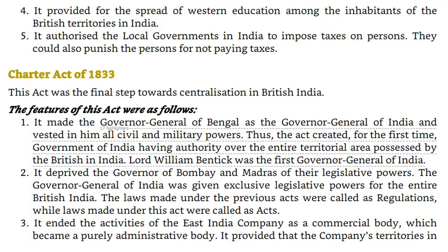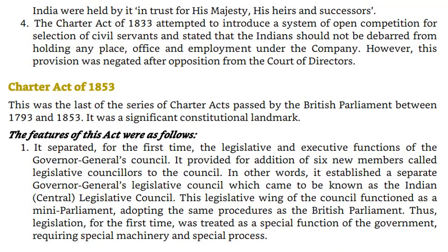Charter Act of 1833. This act was the final step towards centralization in British India. Its features were: 1. It made the Governor-General of Bengal the Governor-General of India and vested in him all civil and military powers, thus creating for the first time a Government of India having authority over the entire territorial area possessed by the British in India. Lord William Bentinck was the first Governor-General of India. 2. It deprived the Governors of Bombay and Madras of their legislative powers; the Governor-General of India was given exclusive legislative powers for all of British India. Laws made under previous acts were called 'regulations,' while laws under this act were called 'acts.' 3. It ended the activities of the East India Company as a commercial body, making it a purely administrative body held in trust for His Majesty, His Heirs and Successors. 4. The Charter Act of 1833 attempted to introduce a system of open competition for selection of civil servants and stated that Indians should not be debarred from holding any place, office, or employment under the Company. However, this provision was negated after opposition from the Court of Directors.